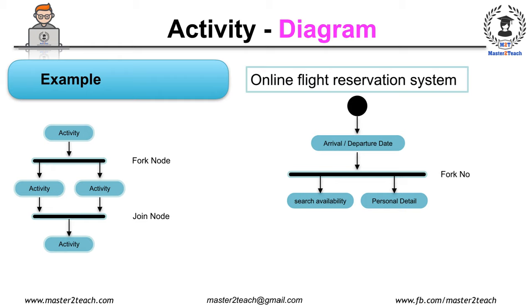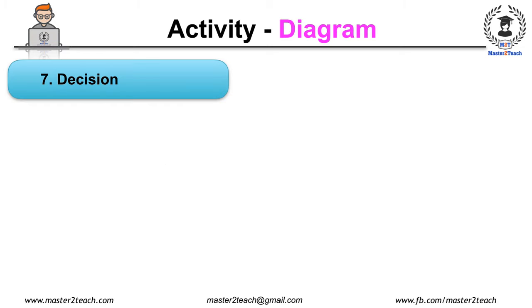Similarly, these two activities join together and flow another activity like select flight, which can be shown by join symbol as shown in the figure. Another notation is Decision symbol. It is similar to the flowchart which is represented by the diamond shape.